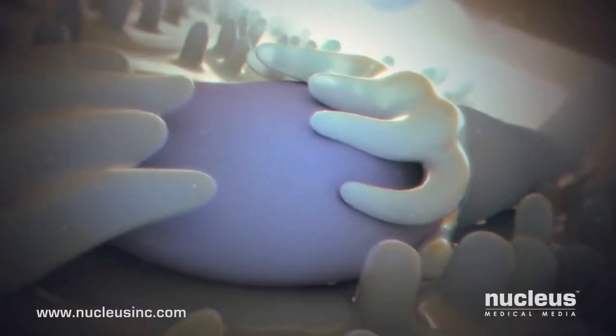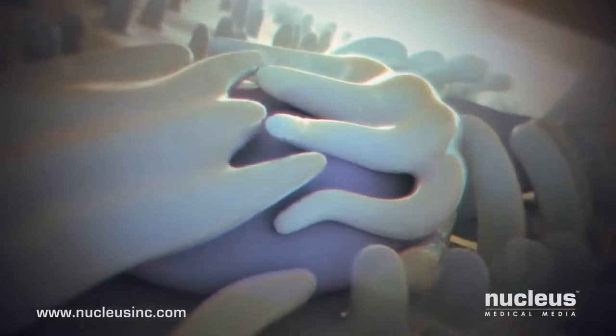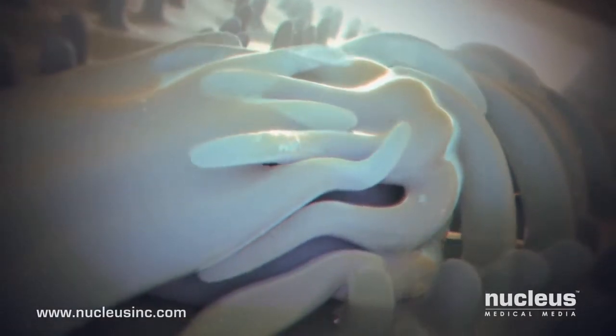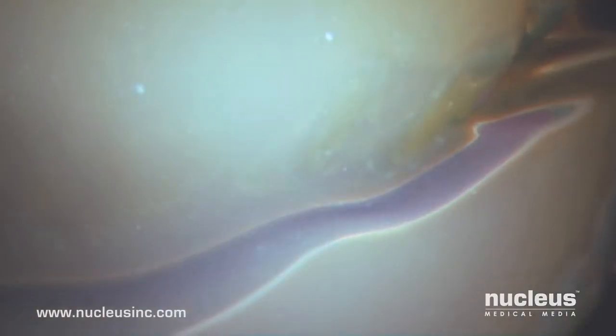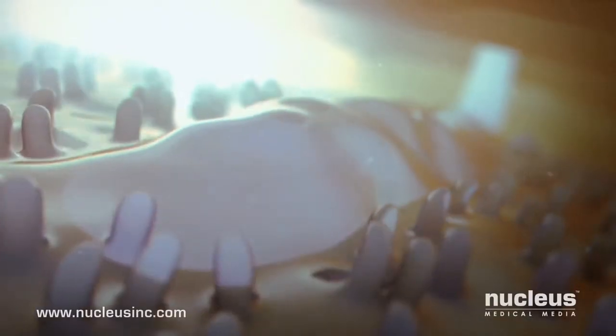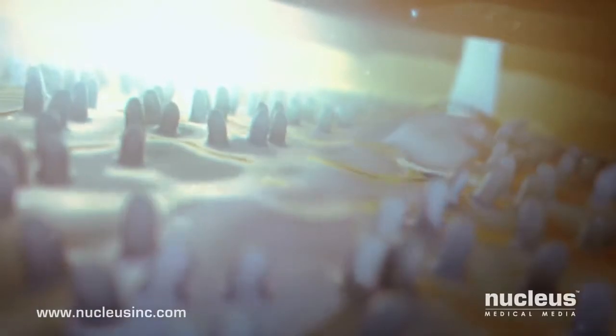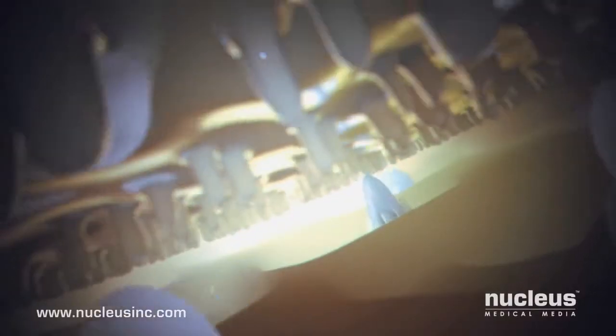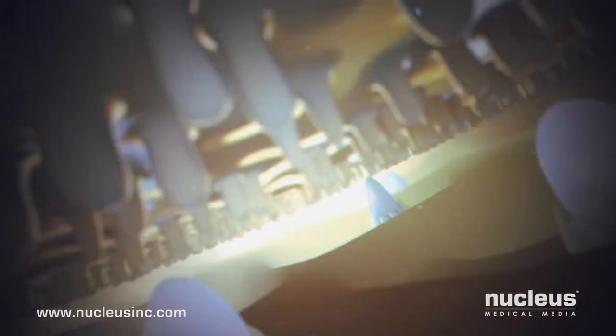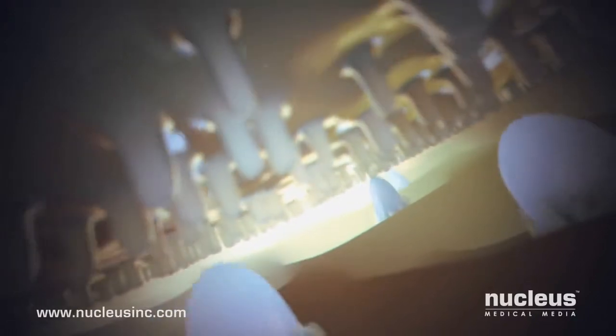After a perilous journey and against incredible odds, a single sperm attaches to the egg cell membrane. Within a few minutes, their outer membranes fuse, and the egg pulls the sperm inside. This event causes changes in the egg membrane that prevent other sperm from attaching to it.